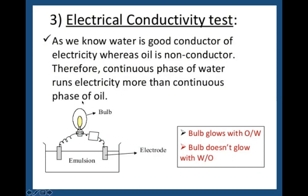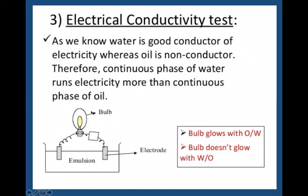Electrical conductivity test: as we know, water is a good conductor of electricity whereas oil is a non-conductor. If we design the setup with an electrode immersed in the emulsion connected to a bulb, and current flows, the bulb will show a glow. If the continuous phase is water, when electricity is passed the bulb will light up, and you can say this is an oil in water emulsion. In this way you can identify whether it is oil in water or water in oil.